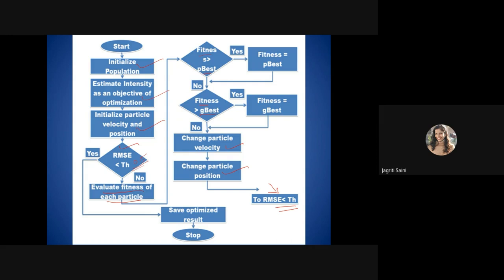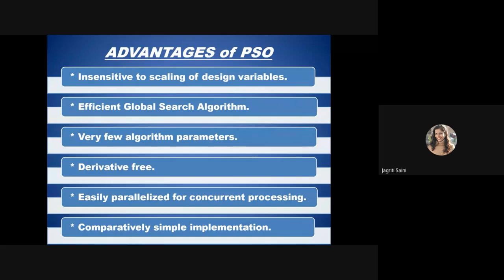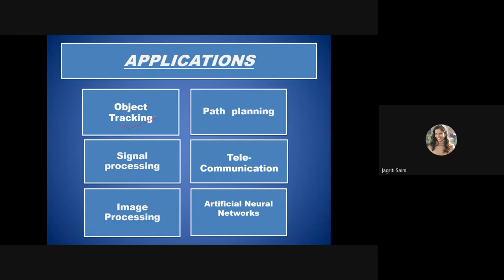Advantages of PSO include: it is insensitive to scaling of design variables; we can add or remove variables as needed; it is an efficient global search algorithm applicable to both local and global conditions; it has very few algorithm parameters that can be updated per requirement; it is derivative-free and easily parallelized for concurrent processing; and it is comparatively simple to implement compared to other optimization algorithms.